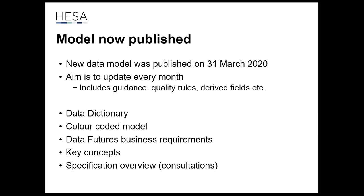We published the model on the 31st of March this year — we're calling it the stable model. Our aim is to do a release every month at the end of the month, updating things with more guidance, examples, queries, quality rules, and derived fields. What we published includes the data dictionary — all the data items you'd be familiar with from our usual coding manuals.